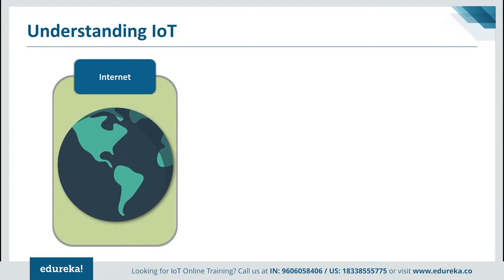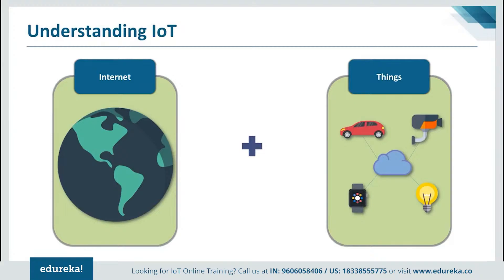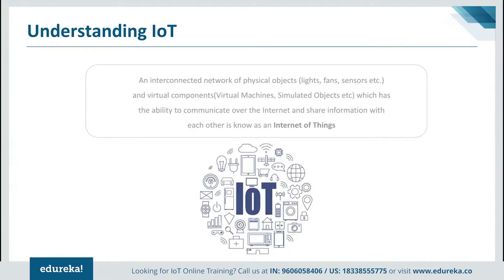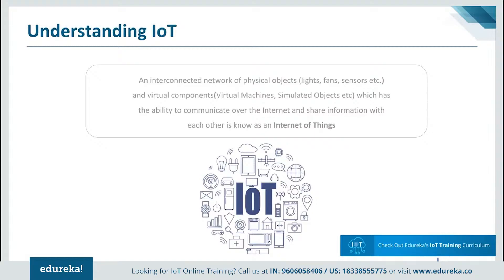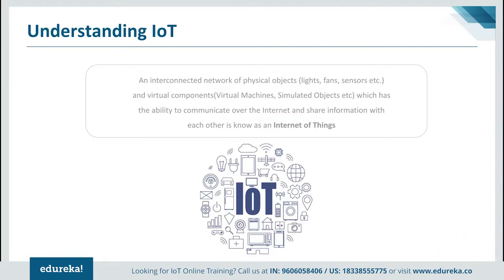What do you understand by the term Internet? Internet is basically a network formed by connecting computers globally. It provides data highways to share information over the network from one place to another. When you expand the capability of Internet from connecting computers globally to connecting several small electronic devices, Internet of Things is formed. According to IBM, IoT is the concept of connecting any device to the Internet and to other connected devices — a giant network of connected things and people, all of which collect and share data about the way they are used and about the environment around them.